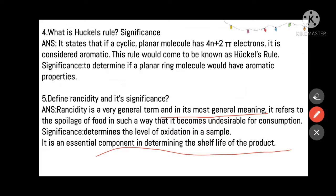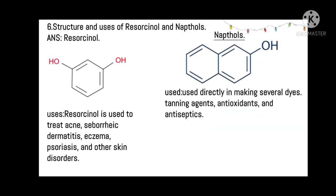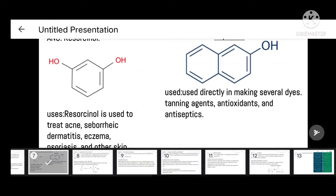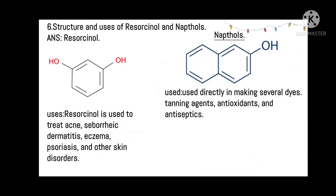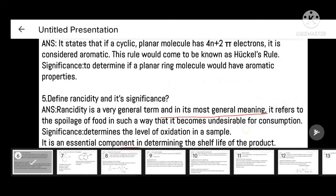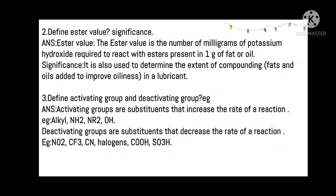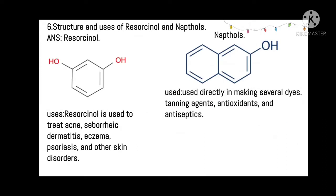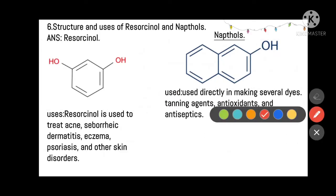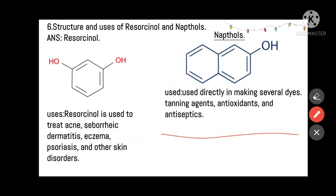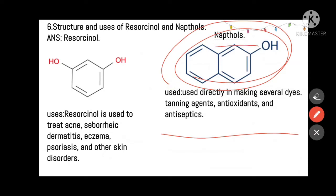The next question is the structure and uses of resorcinol and naphthols. Resorcinol has two -OH groups. It is used in the treatment of acne, seborrhea, dermatitis, eczema, and other skin disorders. Naphthols are used in making several dyes, tanning agents, antioxidants, and antiseptics. The naphthalene balls we keep in our clothes or toilet rooms are naphthols.